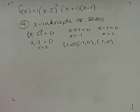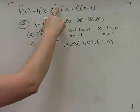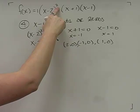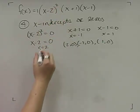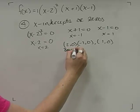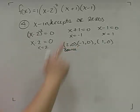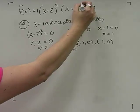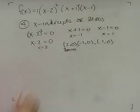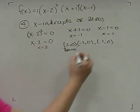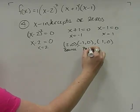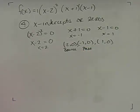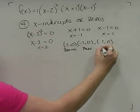Now I need to determine whether the graph bounces or passes through at each intercept by looking at the multiplicity of each factor. The factor (x minus 2) has degree 2 — since the degree is even, the graph bounces at x equals 2. The factors (x plus 1) and (x minus 1) each have degree 1 — since the degree is odd, the graph passes through at x equals negative 1 and x equals 1.